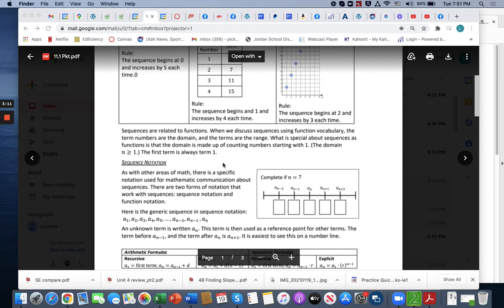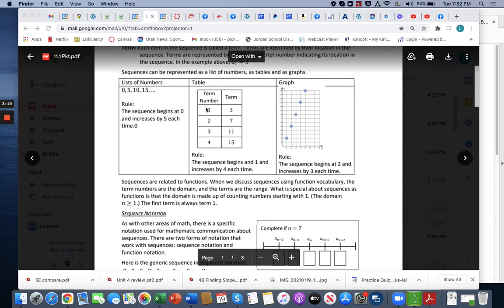Sequences are related to functions. When we discuss sequences using function vocabulary, the term numbers are the domain or the x values. So up here, our term numbers here would be 1, 2, 3, or 4. These are our x values or the domain. And here's our y values or the range. So here it doesn't show the domain, but we know that the domain would be 1, 2, 3, and 4 because this is the first term in this sequence. So this would be our y value: when x is 1, y is 0; when x is 2, y is 5; when x is 3, y is 10; and when x is 4, y is 15.